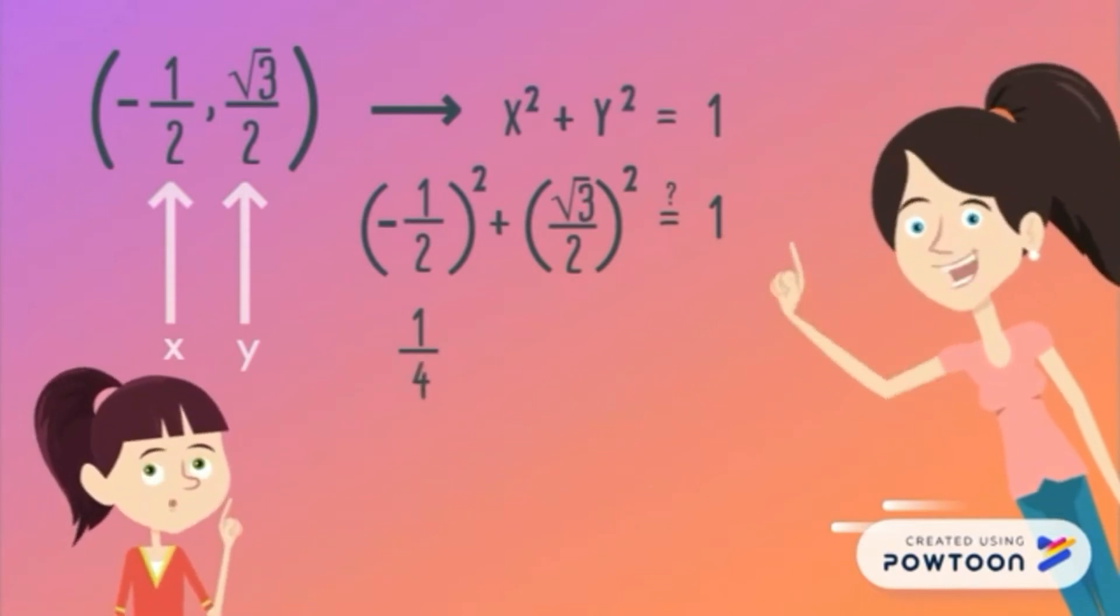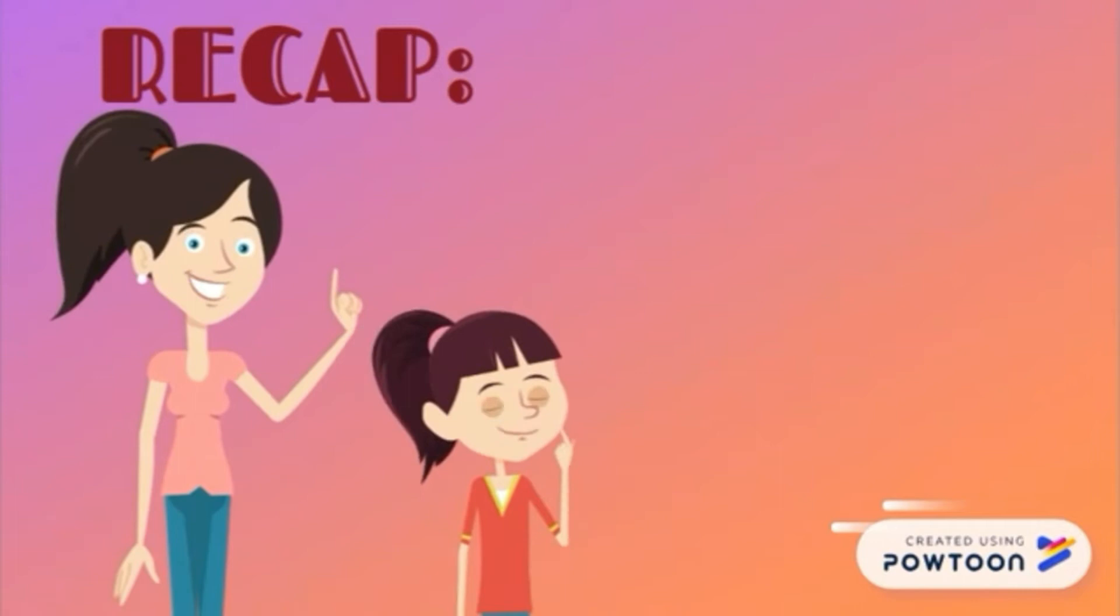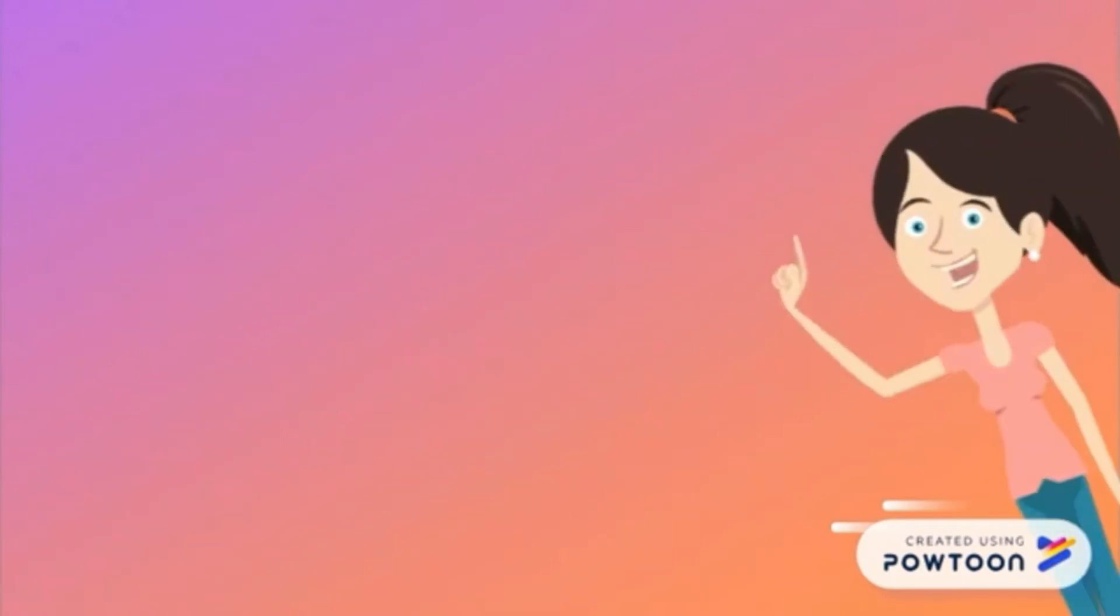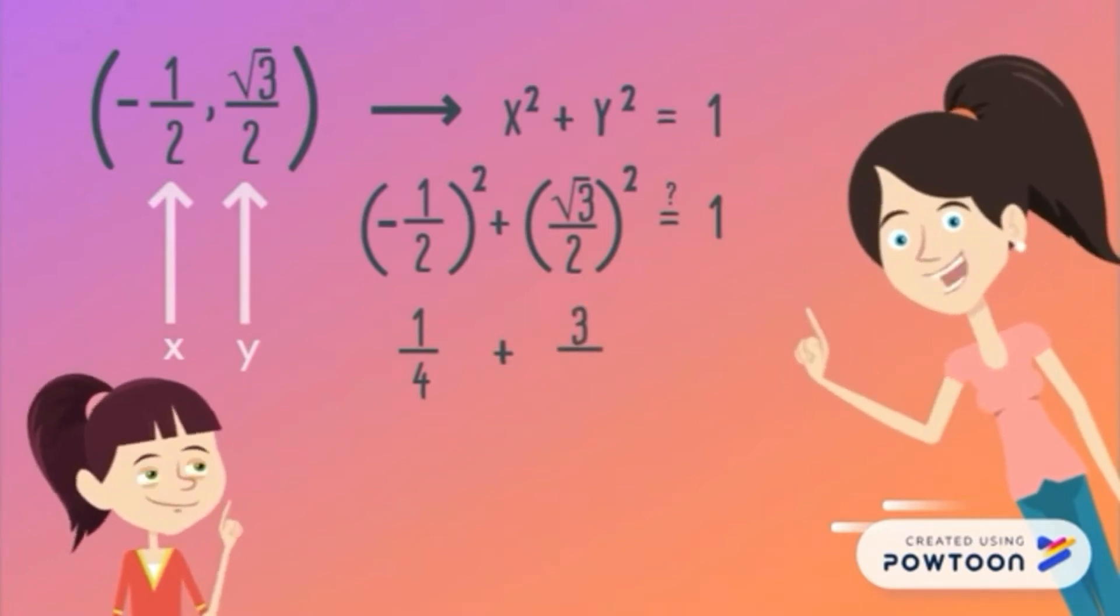Another quick recap: When multiplying the numerator with the same numerical value, the answer is the numerical value itself. Just like in this example, square root of 3 times square root of 3 equals 3. Now, multiplying the denominators, 2 times 2 equals 4. Then we have our y squared, which is 3 fourths.